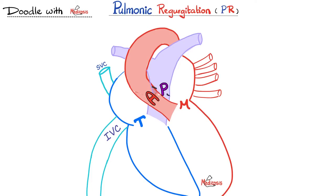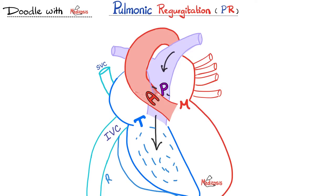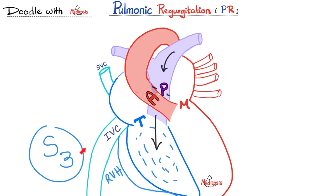In pulmonic regurgitation, we have failure of closure of the pulmonic valve, leading to backflow of blood from the pulmonary trunk to the right ventricle. This volume overload is going to cause dilation of the right ventricle as well as eccentric hypertrophy — eccentric, because it is due to volume overload rather than pressure overload. Because there is volume overload, we expect to hear an S3 gallop rhythm.